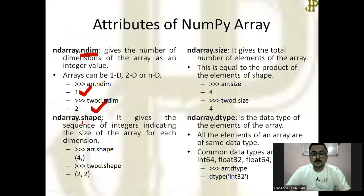Second attribute is shape. It gives the sequence of integers indicating the size of the array for each dimension. Here it shows 4: there is one dimensional array and there are four elements present. And in 2D shape, there are two rows and each row, there are two values present.